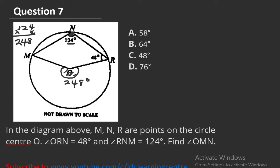We need to find angle MOR. Since angles at a point sum to 360 degrees, we have 360 minus 248 equals 112 degrees. So angle MOR is 112 degrees.